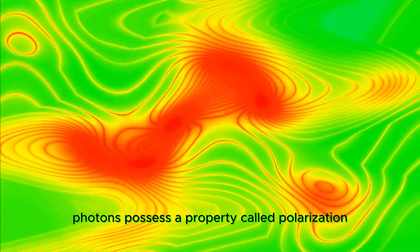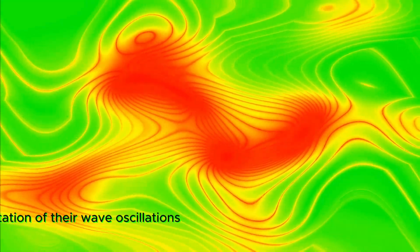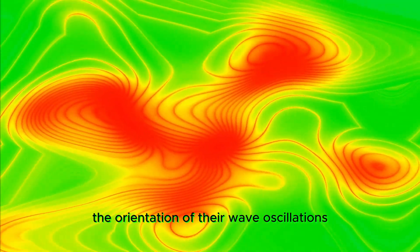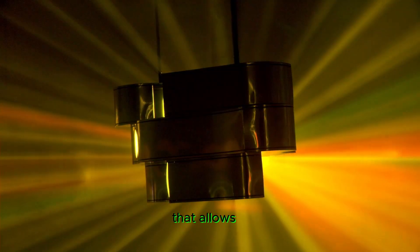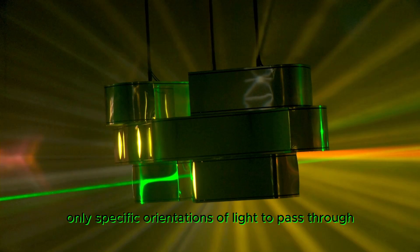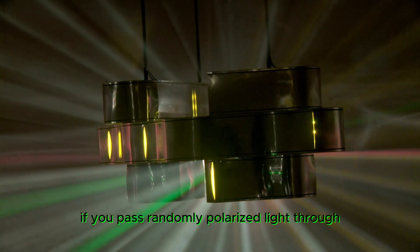Photons possess a property called polarization, which describes the orientation of their wave oscillations. To measure a photon's polarization, you would use a polarizer that allows only specific orientations of light to pass through. If you pass randomly polarized light through two polarizers aligned at 90 degrees, you expect no light to reach the detector.